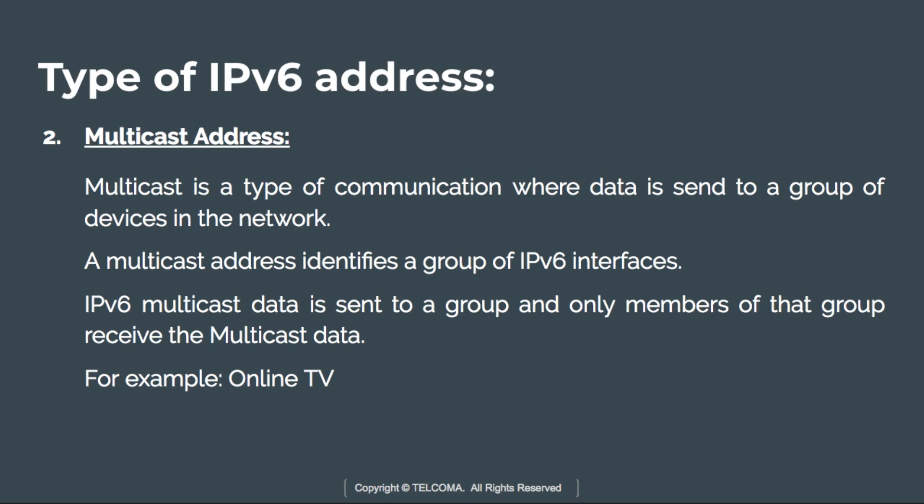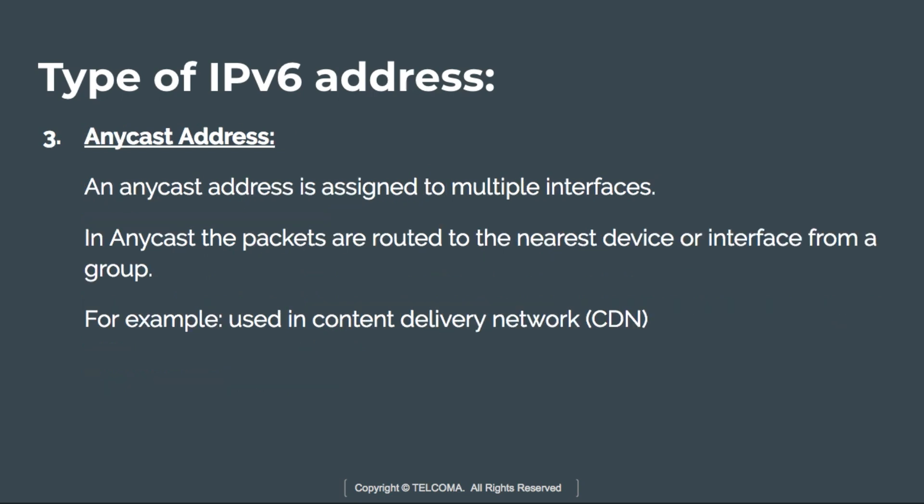Next is the anycast address. This is an additional option in IPv6 that is not present in IPv4. An anycast address is assigned to multiple interfaces. In anycast, packets are routed to the nearest device or interface from a group. For example, anycast is used in content delivery networks (CDN).